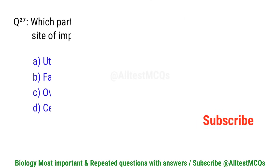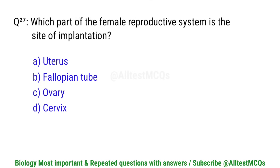Question number 27. Which part of the female reproductive system is the site of implantation? Right option is A. Uterus.